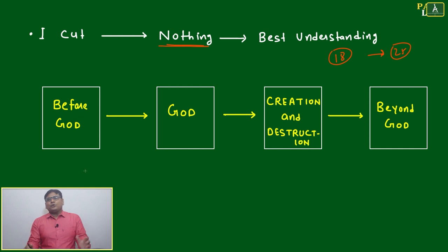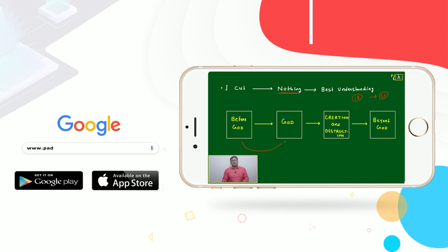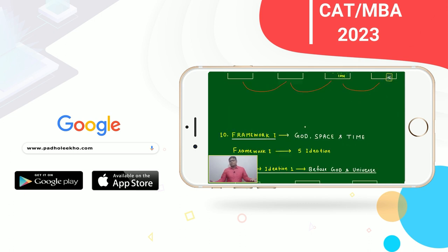Then just I will make one small pictorial or flow diagram for understanding our vast vocabulary. This will start with Before God, it will go to the God, Creation and this Destruction of this Universe, Beyond God, in between Life.